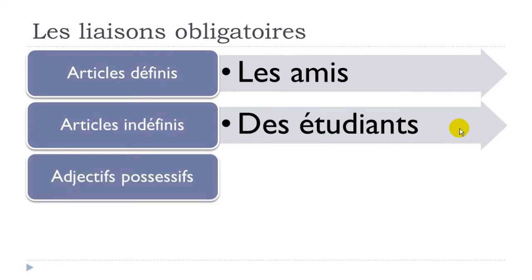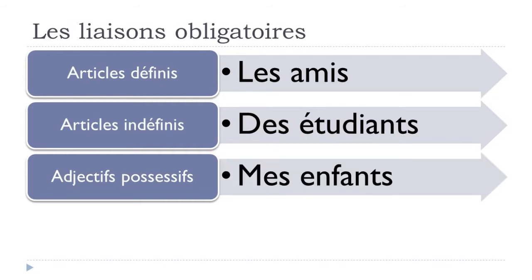Another possibility: the adjective possessif — my, your, etc. In French, 'my children' uses the plural form since 'children' is plural, ending with S. 'Enfant' (children) starts with a vowel, so you should make the liaison: mes enfants.